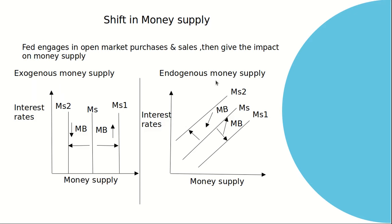In the case of endogenous money supply as well, when there is a purchase of securities, there will be a rightward shift — the monetary base will increase and money supply will increase. In the case of sales, it will shift to the left, the monetary base will decrease, and there will be a leftward shift in the money supply curve.